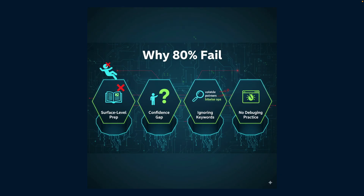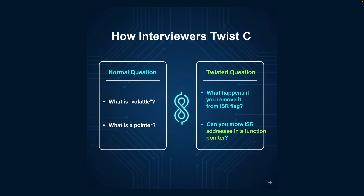Let's see how interviewers twist questions. They don't ask 'what is volatile?' — they ask 'if I remove volatile from a flag in ISR communication, what will happen?' They don't ask 'what is a pointer?' — they ask 'can you store an ISR address in a function pointer? Show me how.' They don't ask 'what is static?' — they ask 'why is static dangerous inside recursion?' This is where candidates who just memorize theory fail.